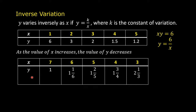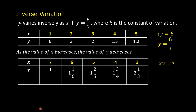The values of y are 1, 1 and 1/6, 1 and 2/5, 1 and 3/4, 2 and 1/3. Notice that if you multiply each value of x by the corresponding value of y, the product is always equal to 7. 7 times 1 is 7, 6 times 1 and 1/6 is 7, 5 times 1 and 2/5 is 7, 4 times 1 and 3/4 is 7, 3 times 2 and 1/3 is 7. So, x times y is equal to 7.